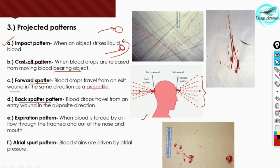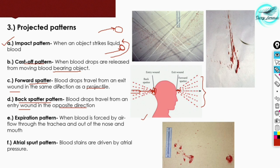Back spatter patterns are formed from the entrance wound of a gunshot injury. Blood drops travel from the entry wound in the opposite direction. Note that forward spatter patterns are formed in the same direction as the projectile, while back spatter patterns are formed in the opposite direction of the projectile. This distinction can be asked in exams.